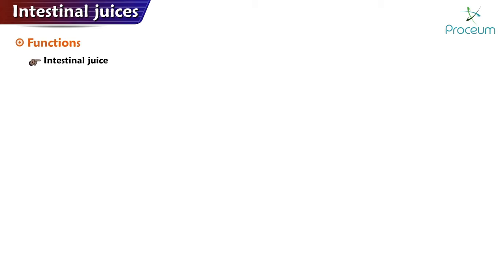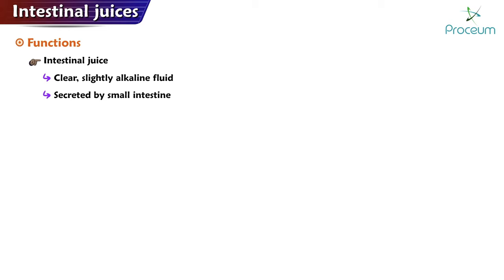Intestinal juice is a clear, slightly alkaline fluid secreted by the small intestine. It contains several important substances that help to continue the breakdown of food and facilitate the absorption of nutrients. That's all for the video — we'll see you next time.